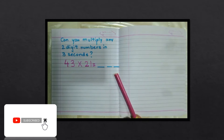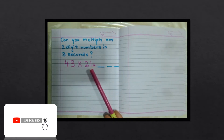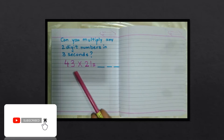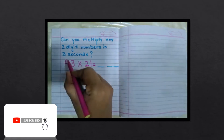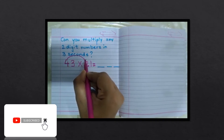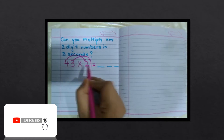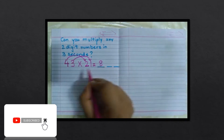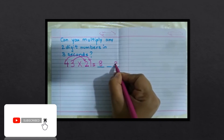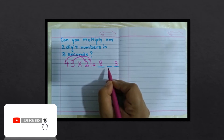You have to follow only three steps. First, multiply the first digit with the first number's first digit, and the second digit with the second number's second digit. So four twos are eight, and three ones are three.